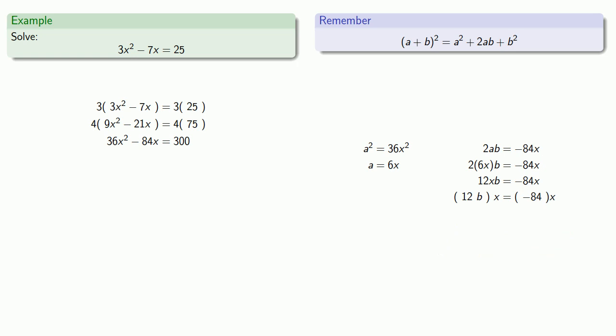So now we know that something times x is the same as -84 times x. So our somethings have to be the same. 12b has to be the same as -84. So we can solve for b. And what I actually need is b², which is 49. So we'll add 49 to both sides.